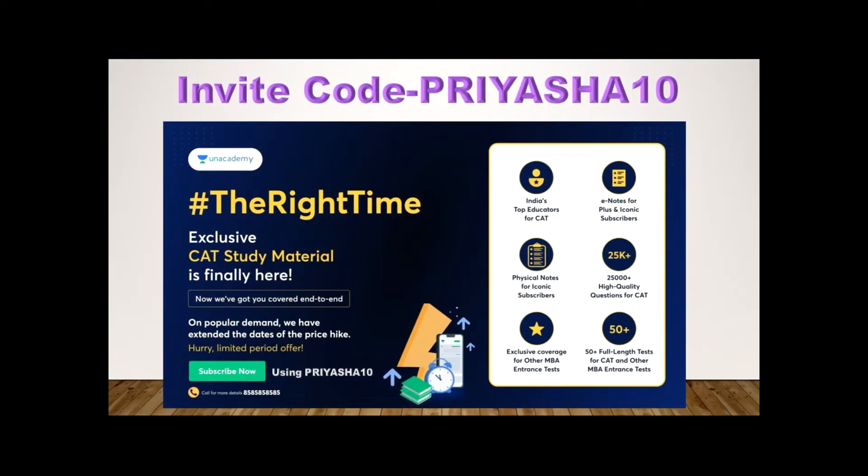I'm very happy to say that the exclusive CAT study material is finally here. Everything will be covered under that study material. It's going to be so comprehensive that there will be around 48 modules in part B and 15 modules in part A. This will be given to you in both digital and paperback format. If you're a Plus subscriber, you get access to these notes in digital format. If you're an Iconic subscriber, along with the digital format, these notes will be delivered right at your home at the included price of your subscription.